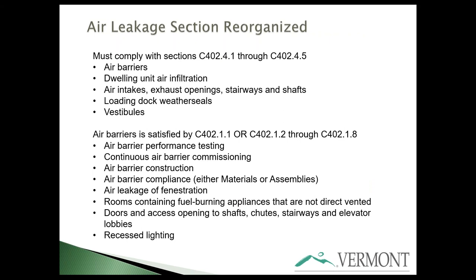Moving to the second half of the envelope section: air leakage. The section has been reorganized in a more logical manner. Instead of optional versus mandatory requirements scattered throughout, everything required is grouped together and everything optional is in one place. You must satisfy five areas: air barriers, dwelling units (new), air intakes, loading dock weather seals, and vestibules.